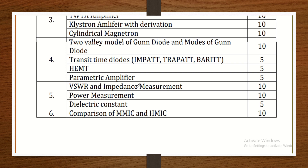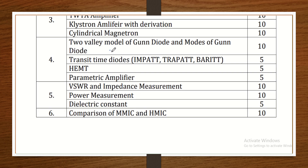HEMT and parametric amplifier are both worth five marks each. If one question is asked for 10 marks, there is more chance of the two-value model. If questions are split into 5-5 marks, then HEMT and parametric amplifier have more chance.